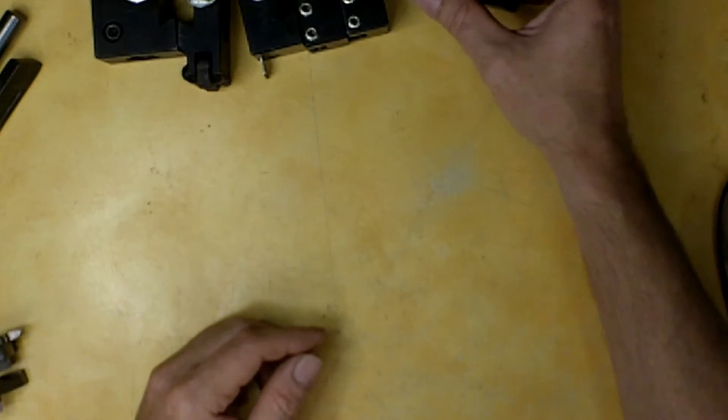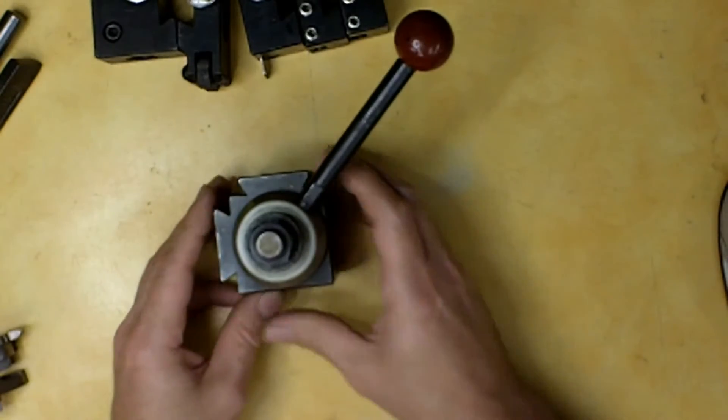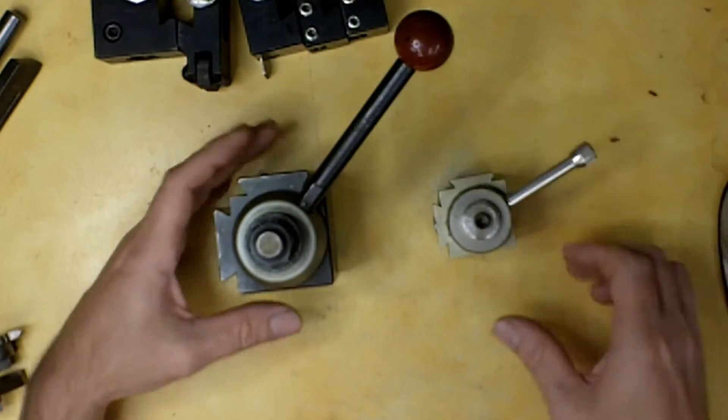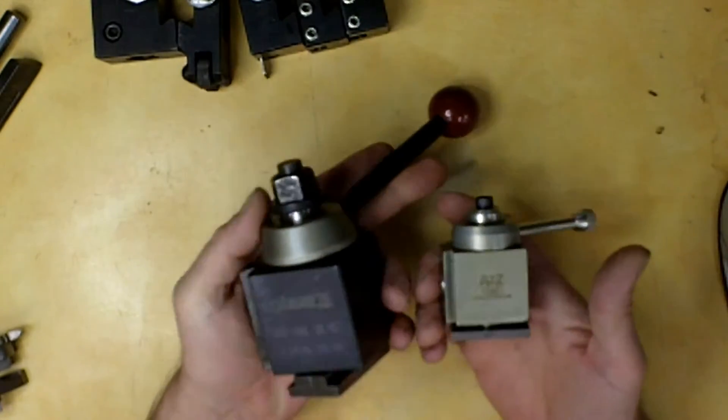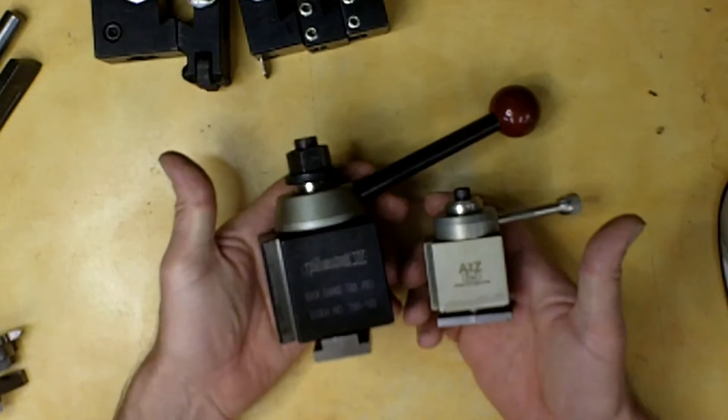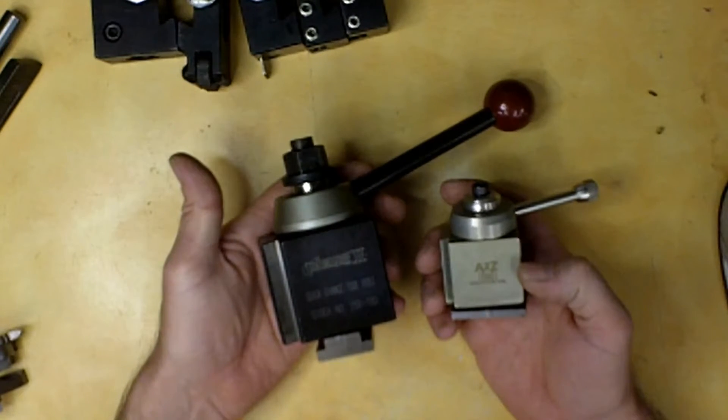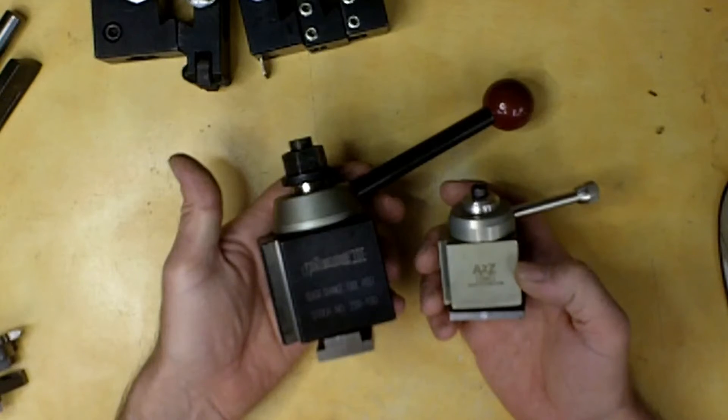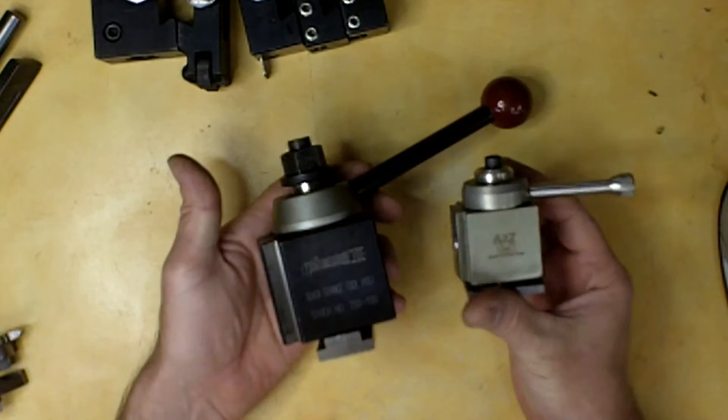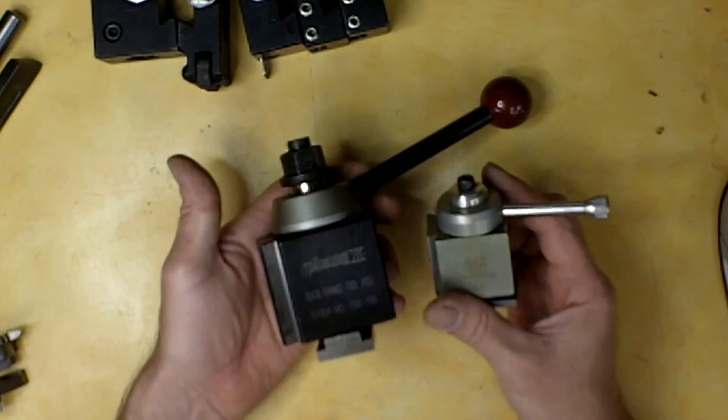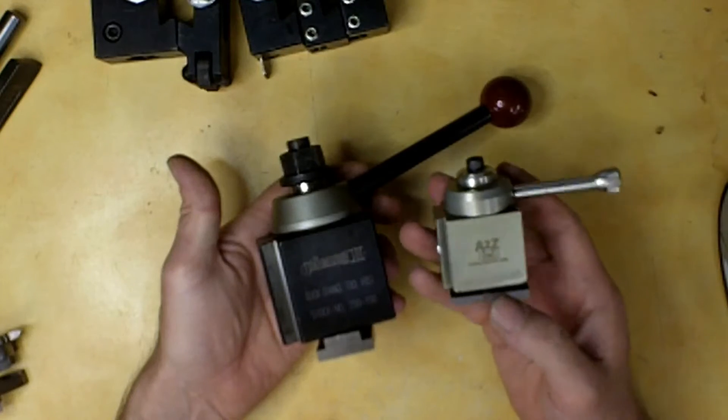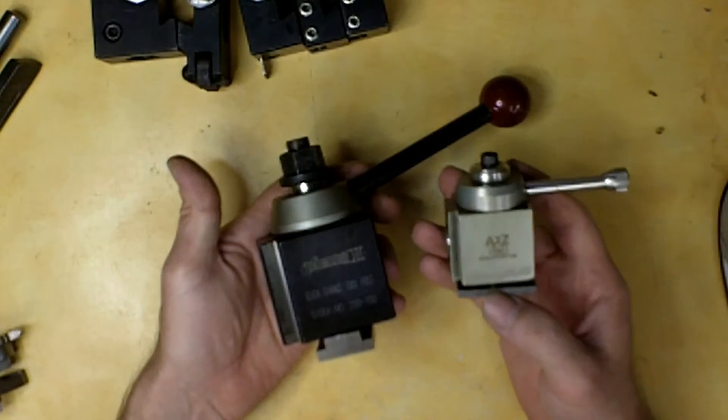Now, what I like using is the quick change tool post and I actually have two right here and you can see the size difference on these. The one in my right hand is actually from A2ZCNC.com. This would actually fit maybe a small import type lathe. I used this on a six inch Atlas lathe.